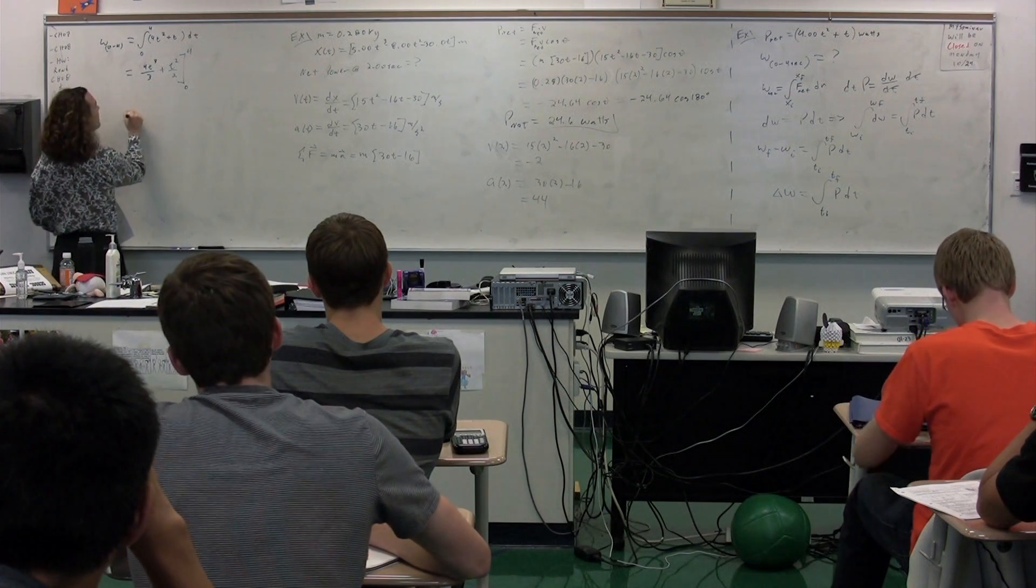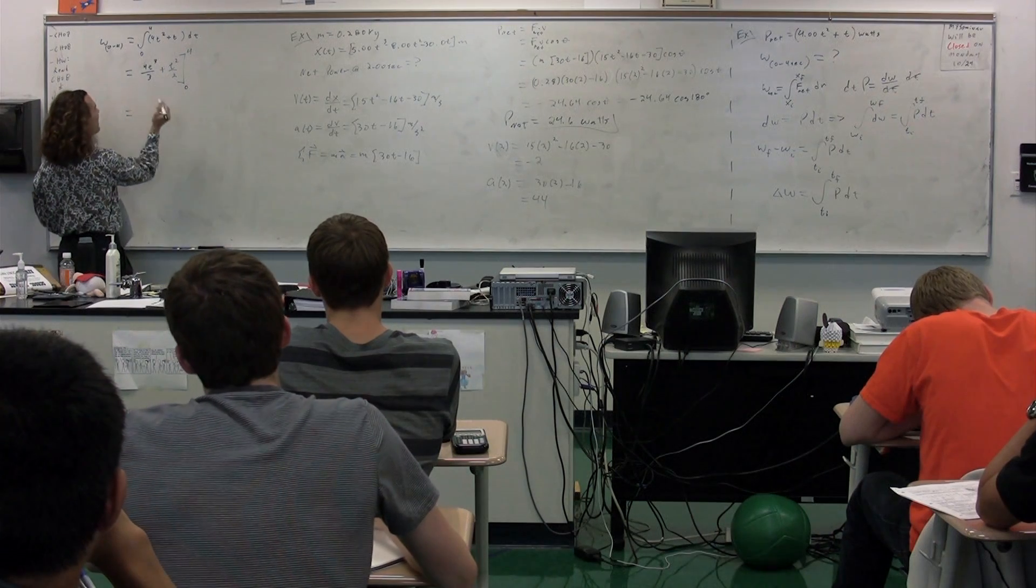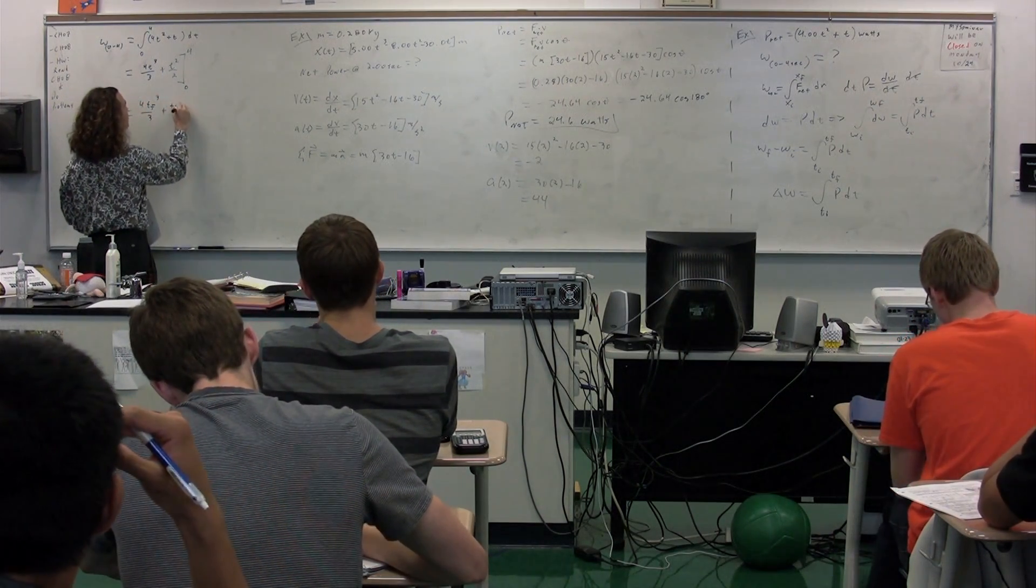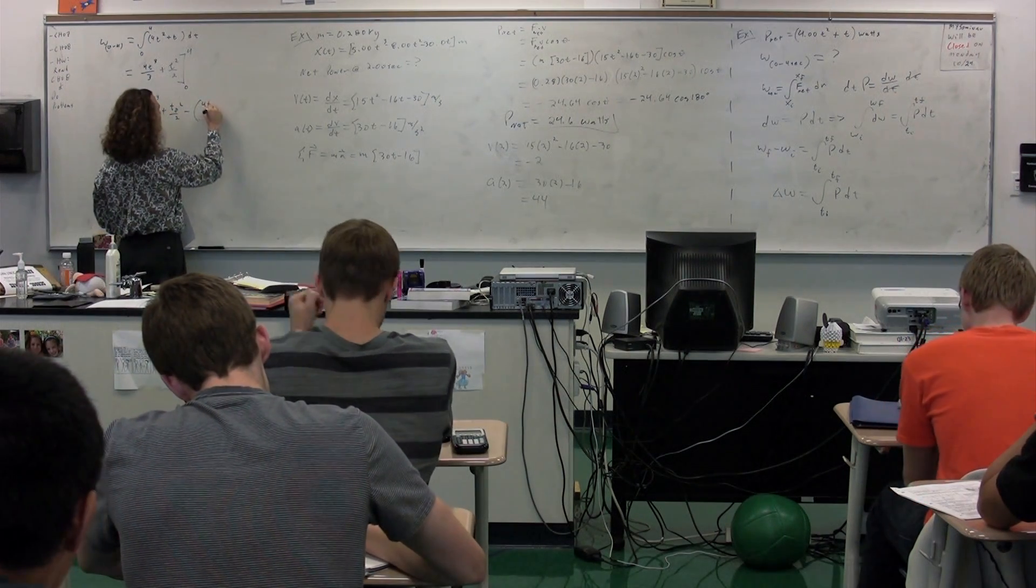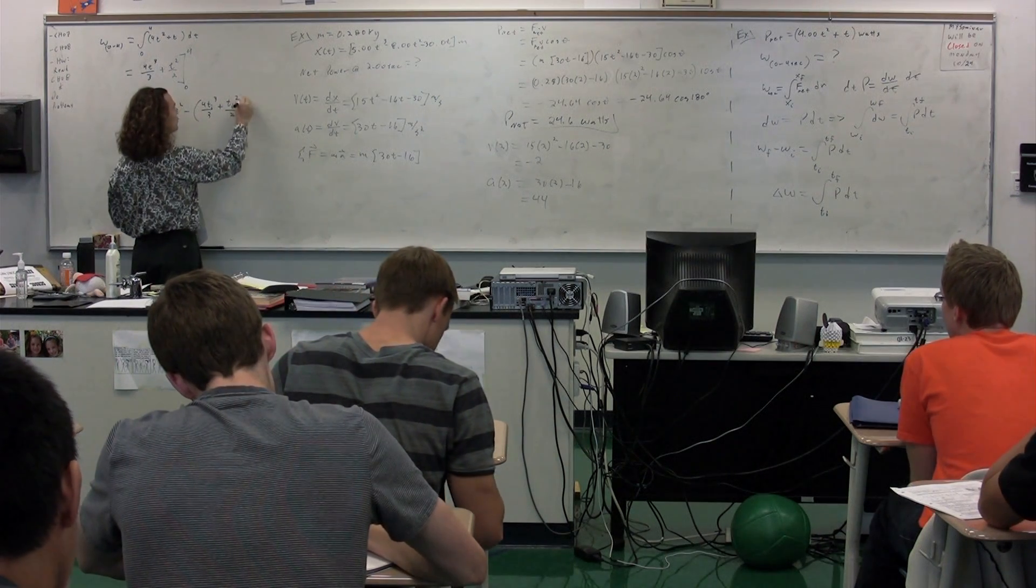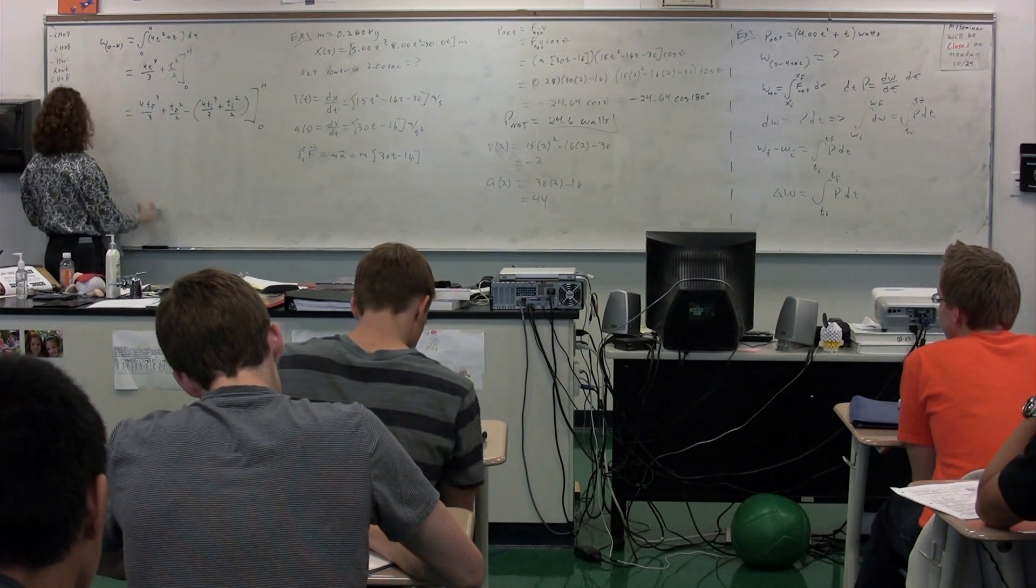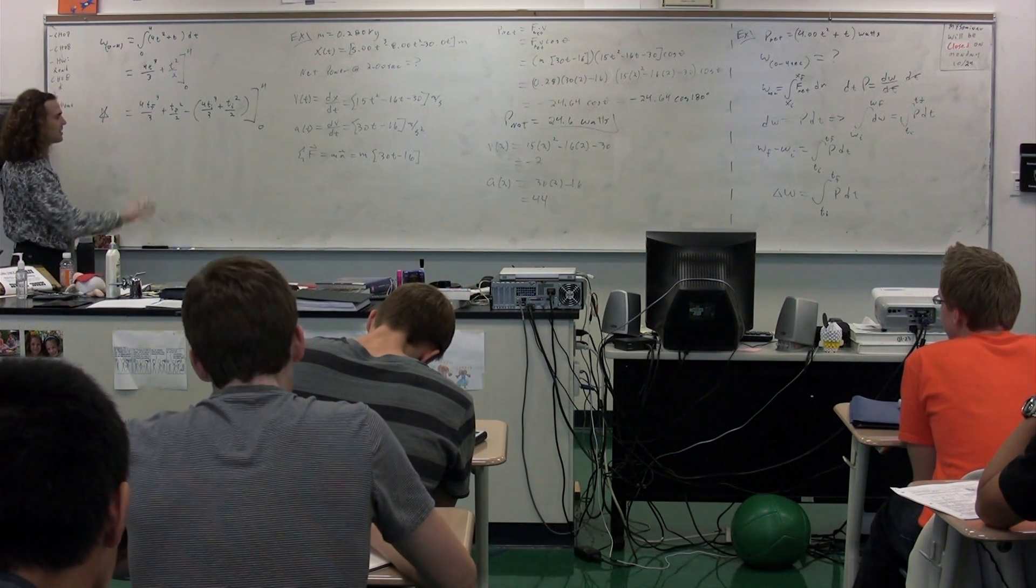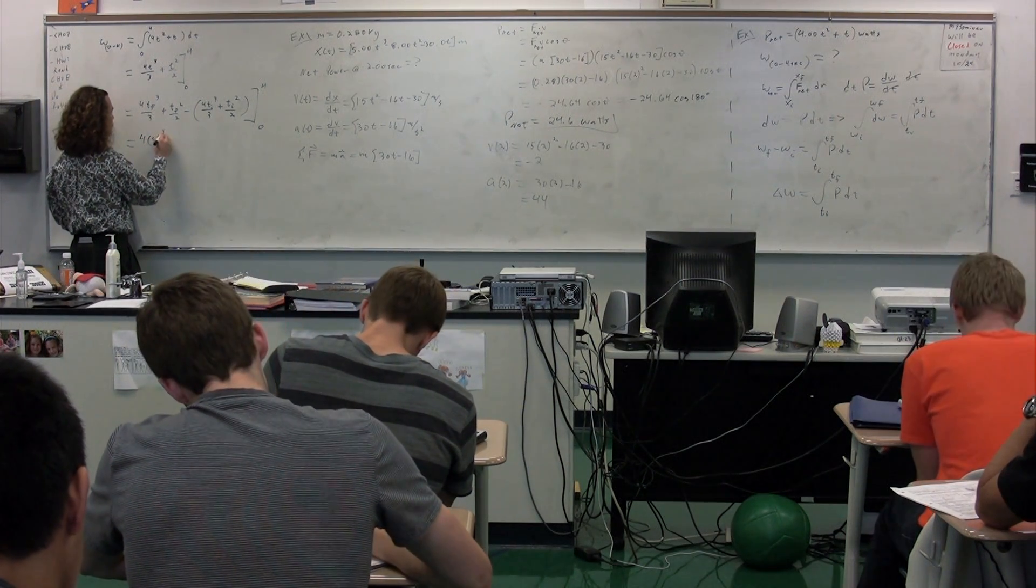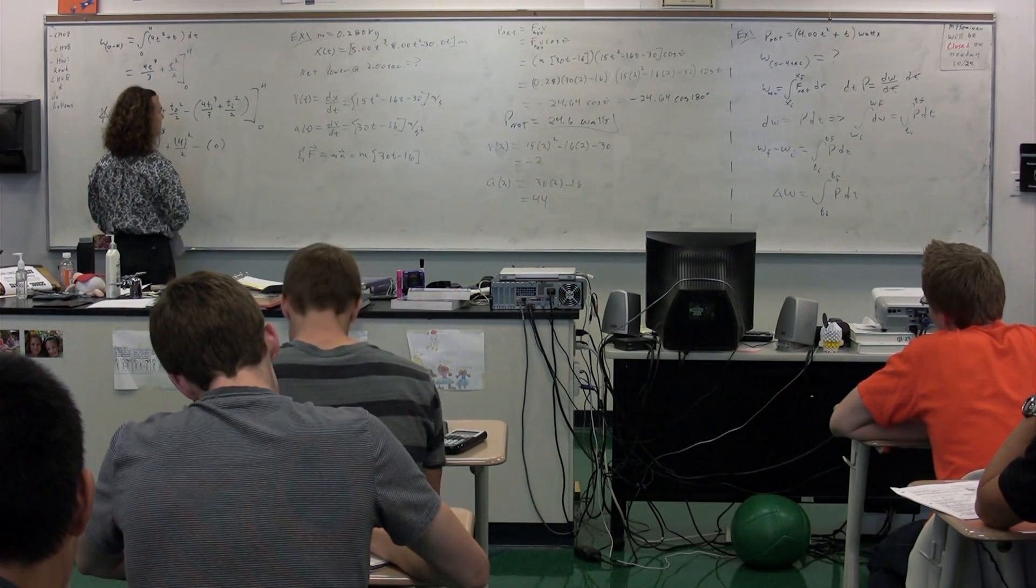So again, we have from 0 to 4. So we have final minus initial. We'll do it this way. So I'll write it out. So 4 t final cubed over 3 plus t final squared over 2 minus 4 t initial cubed over 3 plus t initial squared over 2 from 0 to 4. Again, this is the step that you can sometimes not write out, but I'm writing it out this time just because it's still pretty new for a lot of you. So 4 times 4 cubed over 3 plus 4 squared over 2 minus 0.